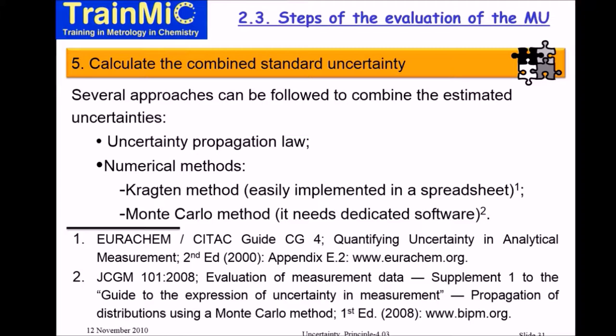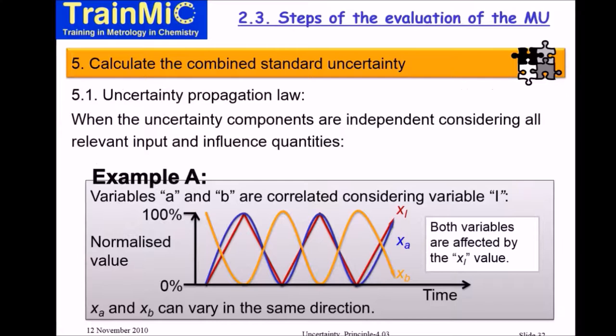In this presentation of the principles of measurement uncertainty, I will discuss the uncertainty propagation law. Although it is more difficult from a mathematical point of view, it allows us to understand how the uncertainty components propagate. The version I will present is the simplest, applicable to independent variables — when you have variables like A and B that are completely independent.